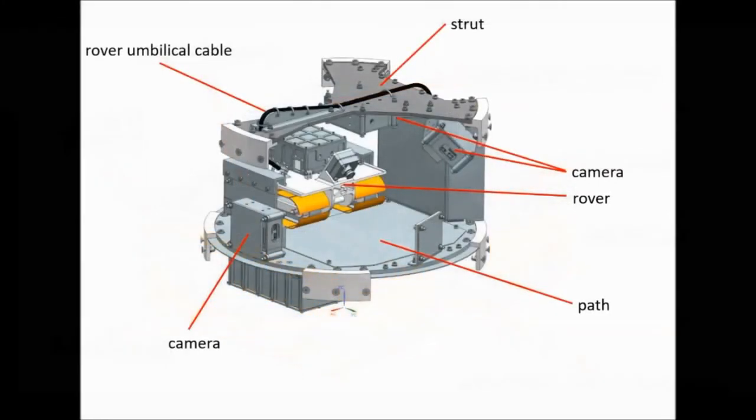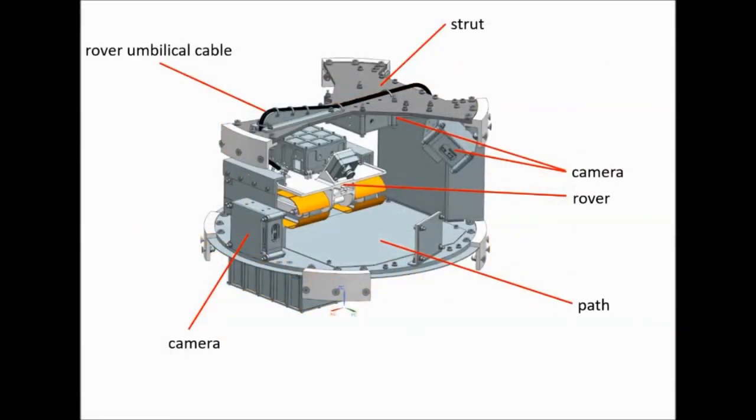The rover is connected to the rocket onboard computer via an umbilical, through which data and commands are transmitted and power is provided. For close monitoring, several cameras are recording the rover's maiden voyage to the edge of space.